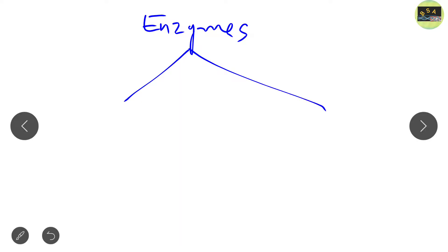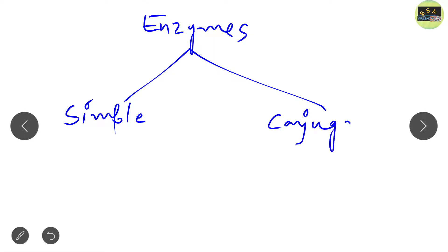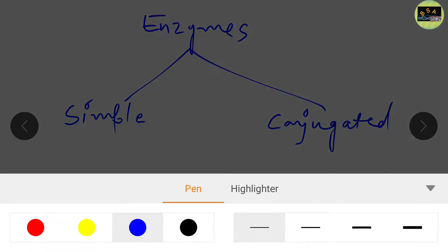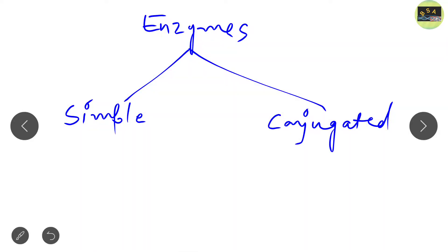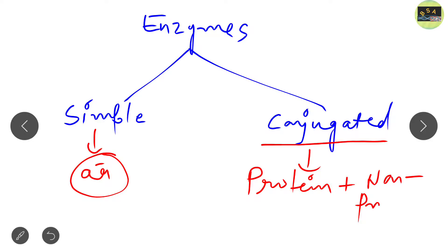Now we will see the general classification of enzyme. If we take a protein-based enzyme and try to classify it, it can be classified into two types: one is simple enzyme and one is conjugated enzyme. Simple enzyme means only amino acids are present — it is a pure protein. Conjugated enzyme means some non-protein part will be there along with the protein part.